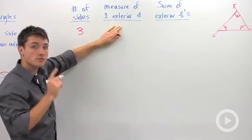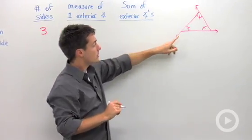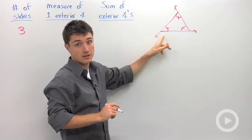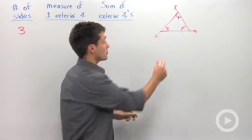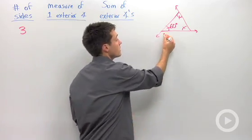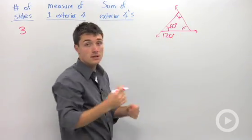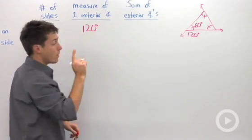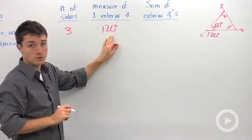We're going to ask ourselves, what's the measure of just one of these? If I look closely, this is a linear pair, so it has to sum to 180 degrees. We know in an equilateral triangle that each angle is 60 degrees, meaning that each of these exterior angles is 120 degrees. I'm going to write in the measure of one exterior angle is 120 degrees.